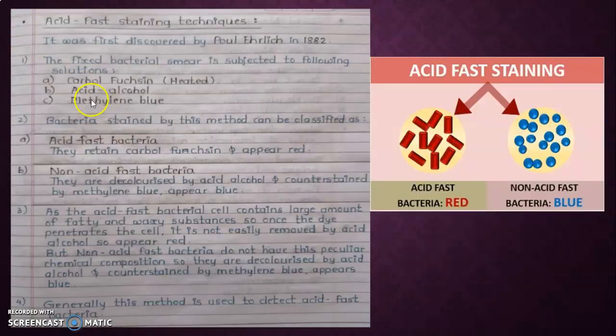Then staining techniques, types of staining procedure we learned. Let's move on to the next part: acid-fast staining techniques. It was first discovered by Paul Ehrlich in 1882. The fixed bacterial smear is subjected to the following solutions: carbol fuchsin, acid alcohol, and methylene blue.